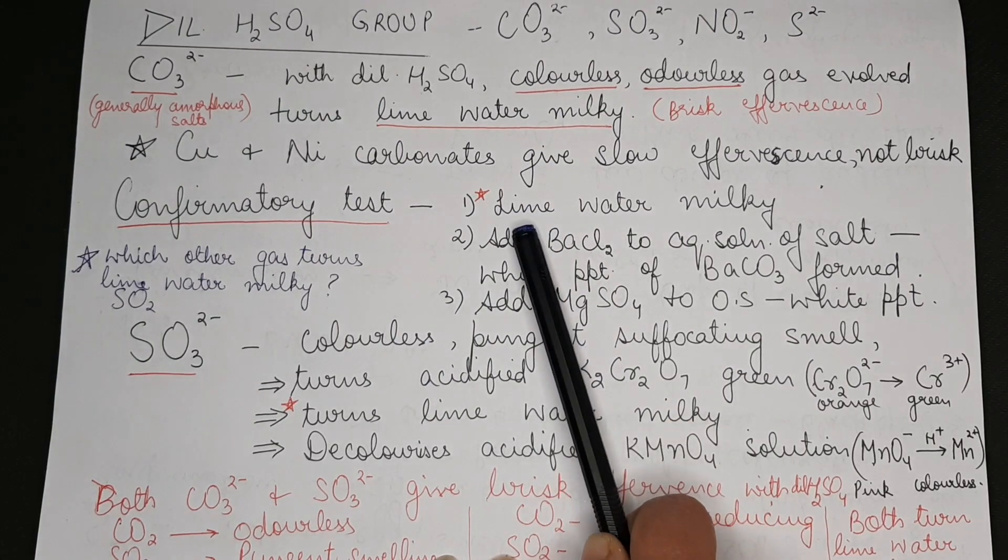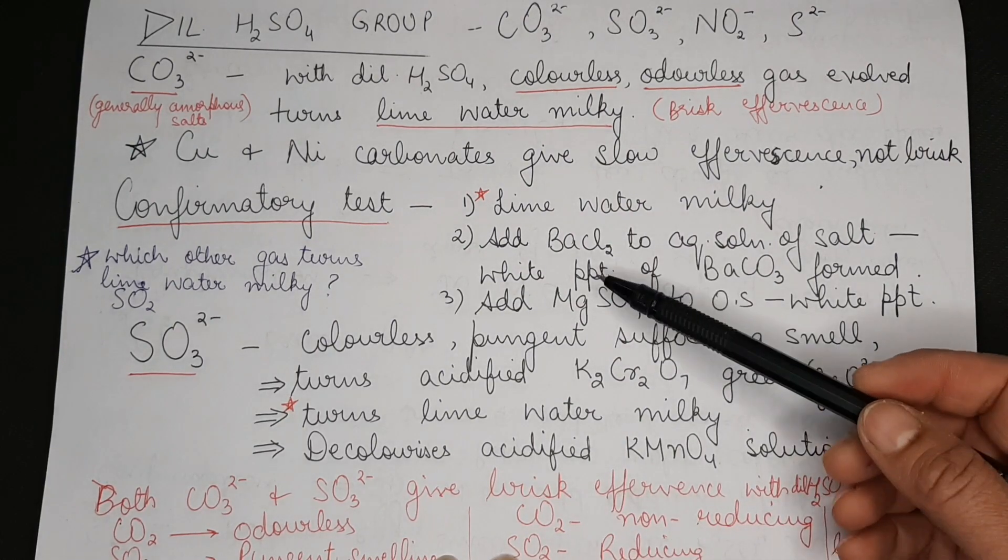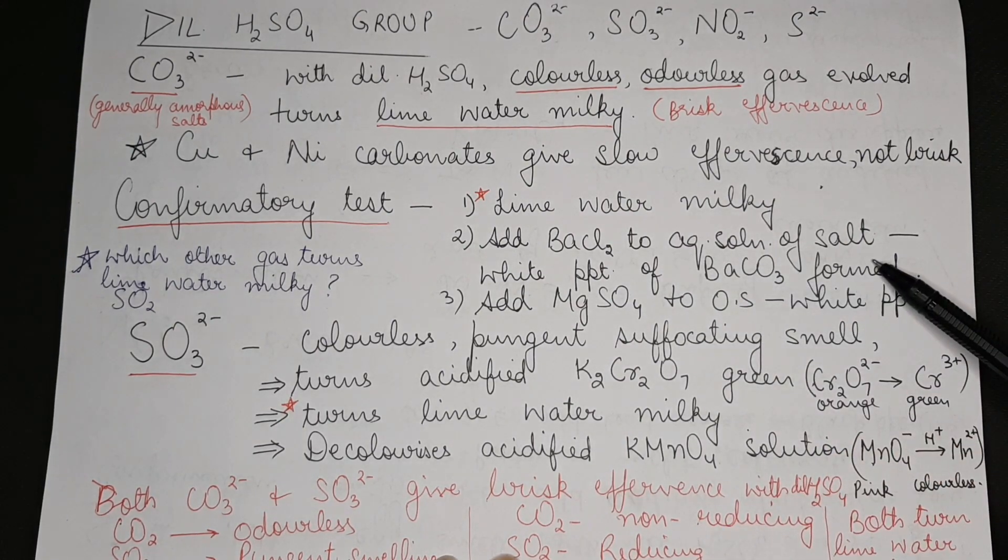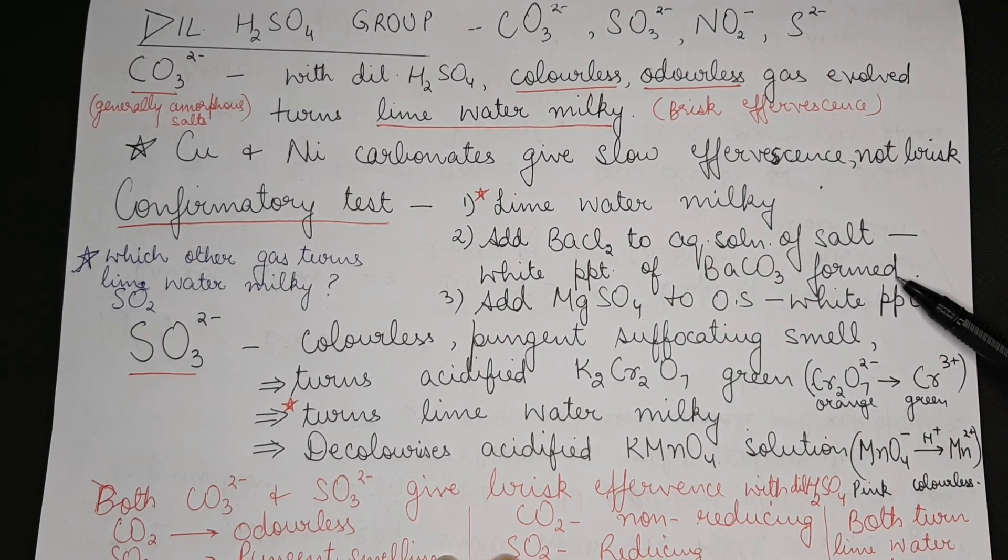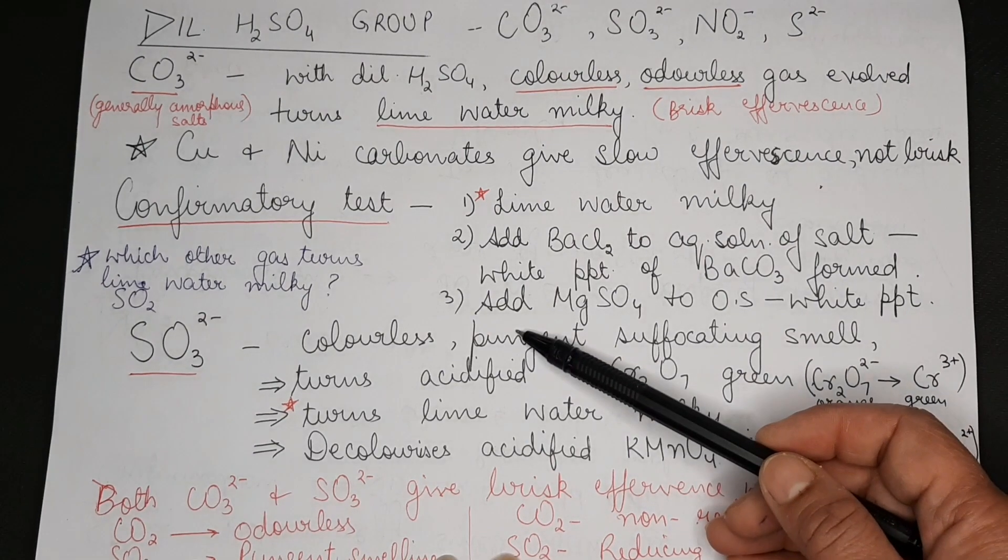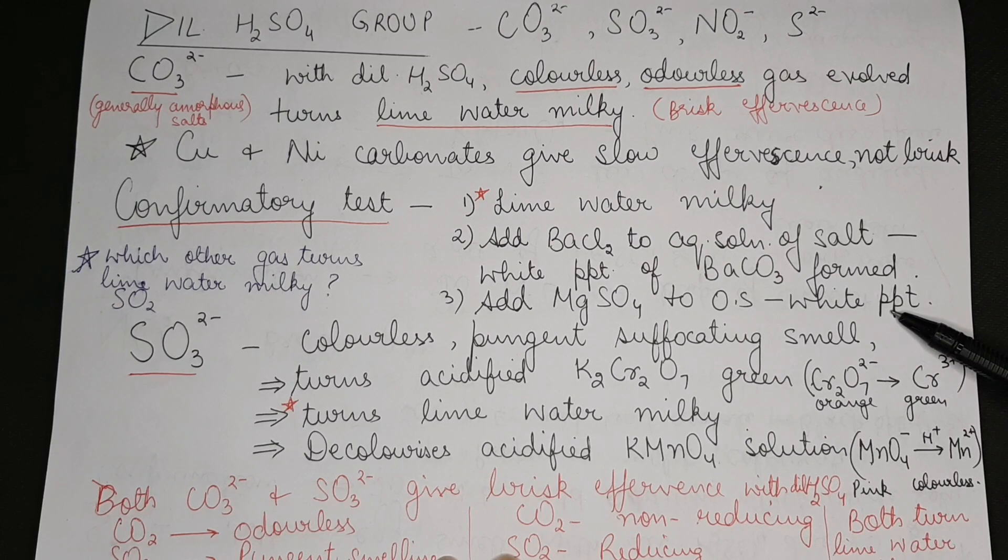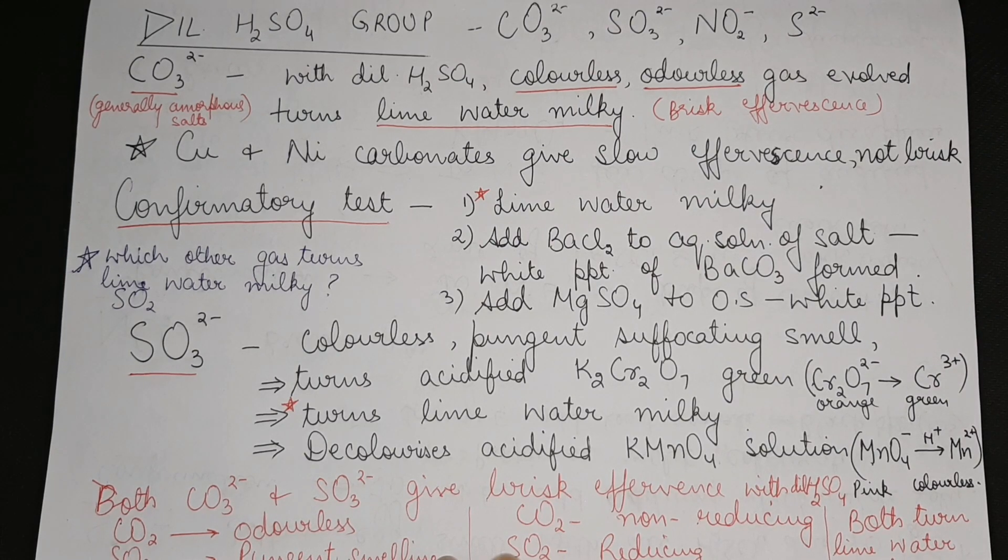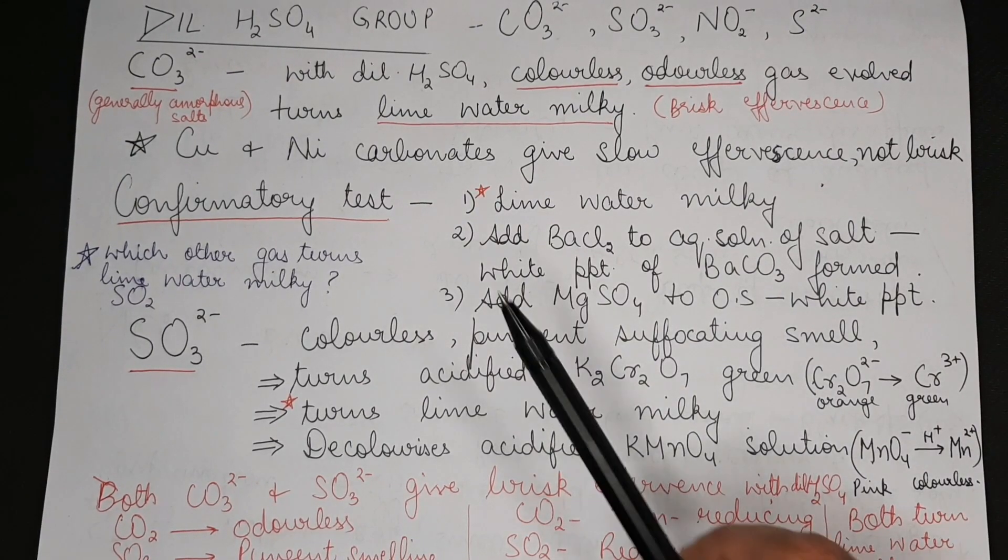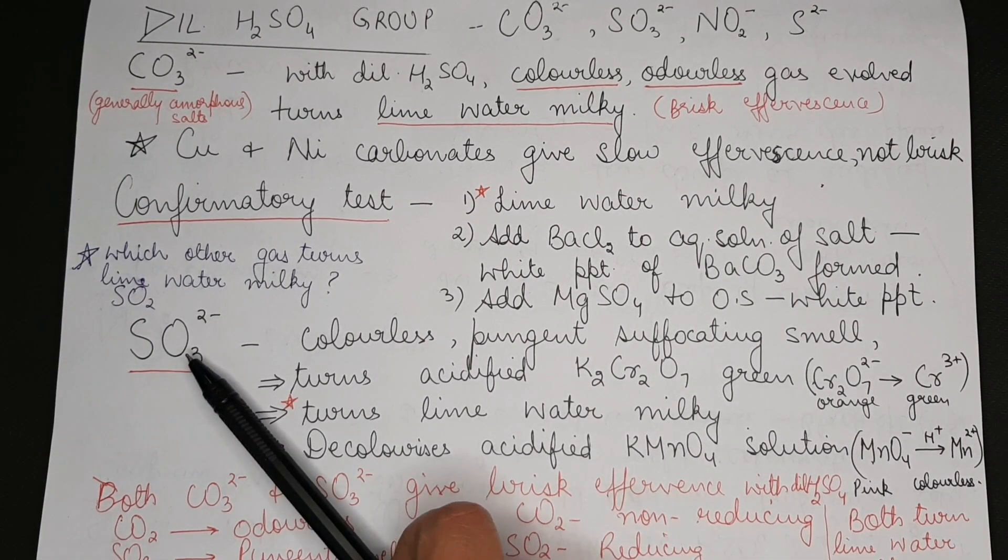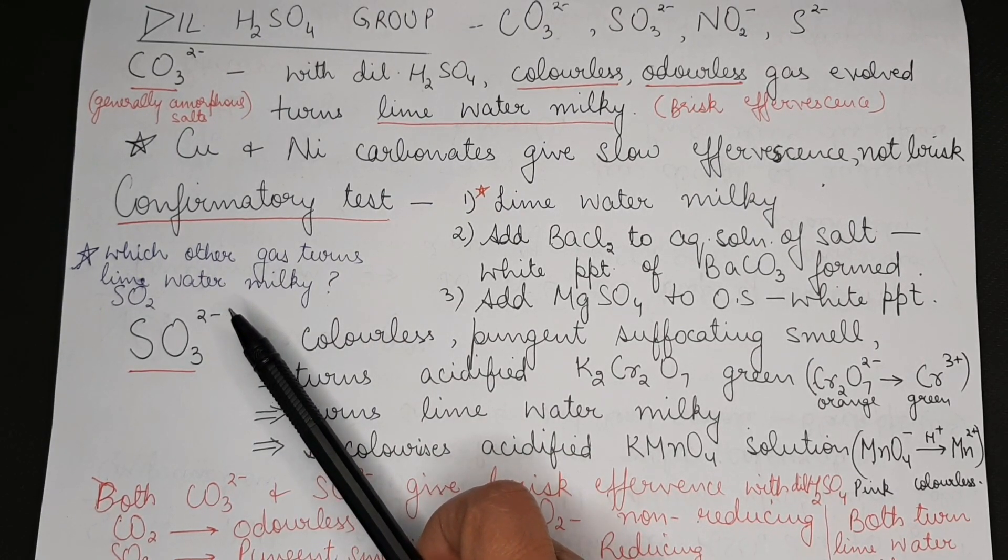Confirmatory test for carbonates: the gas that is carbon dioxide liberated would turn lime water milky. Then second confirmation is add barium chloride to aqueous solution of the salt, a white precipitate of barium carbonate is formed. This also indicates presence of carbonate. Add magnesium sulfate to the OS, we get white precipitate of magnesium carbonate. This is also a confirmatory test for carbonate.